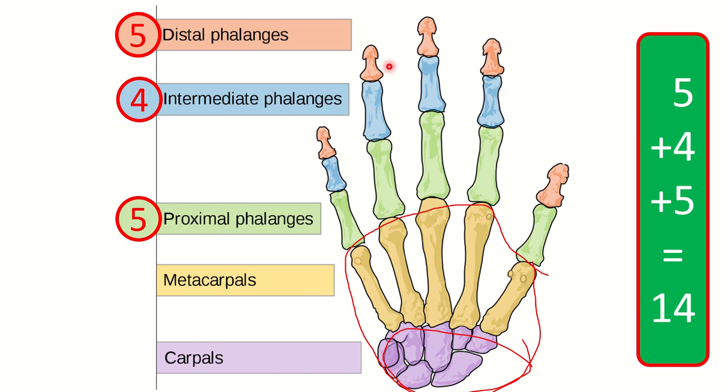And then distal phalanges: one, two, three, four, five. So distal phalanges five. So five plus four plus five - five plus four plus five, it is 14. So in the hand, the number of phalanges is 14.